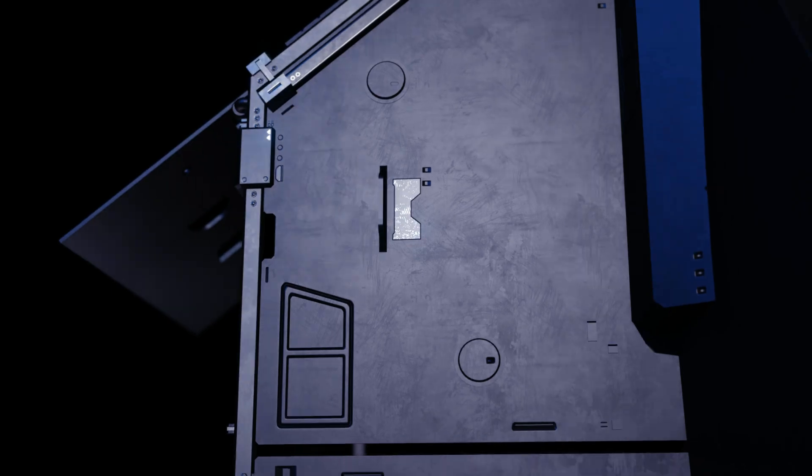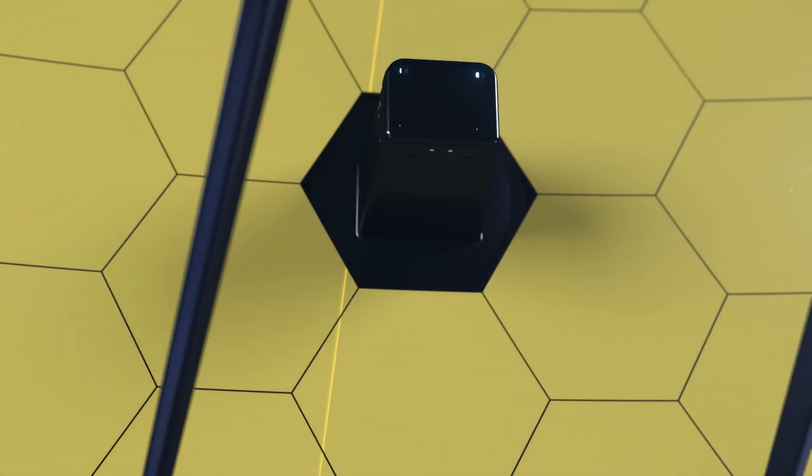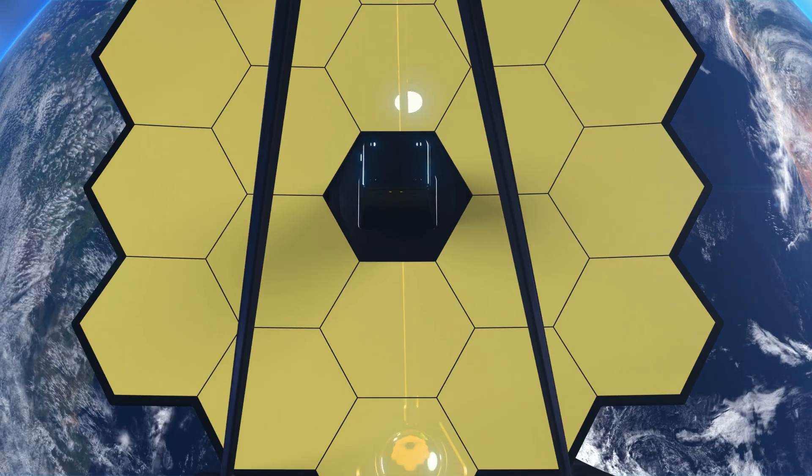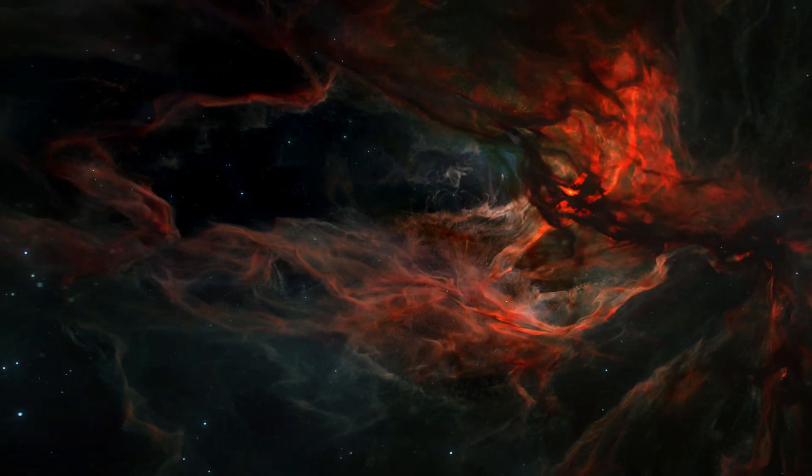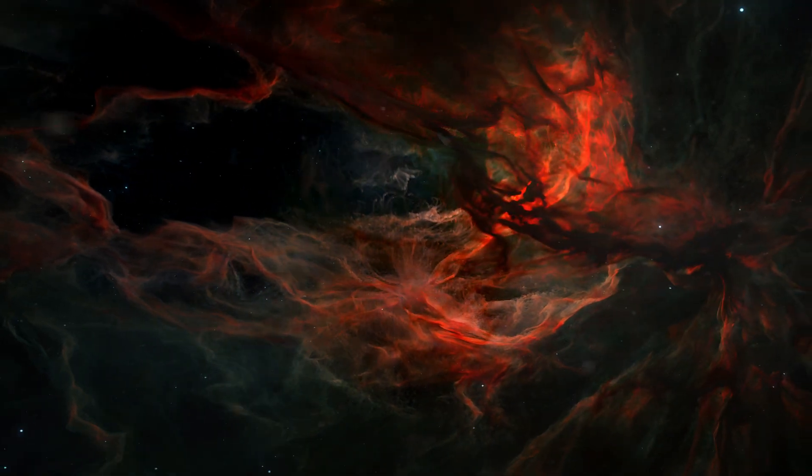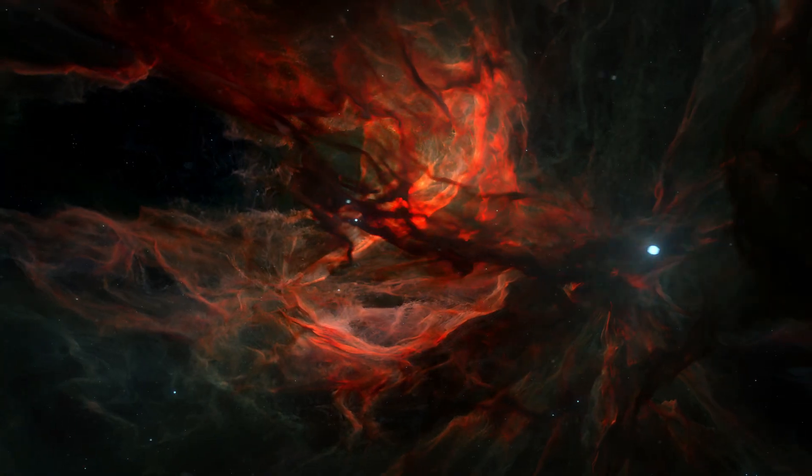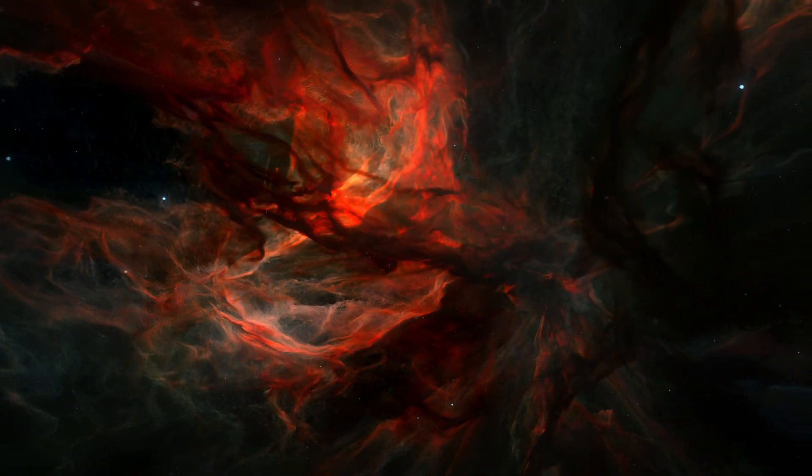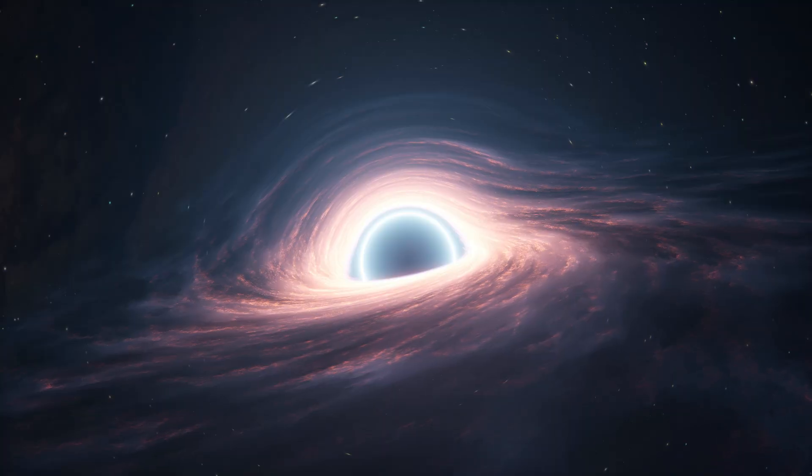So how did these monsters appear so early? One leading idea is the theory of direct collapse. Instead of beginning life as small remnants of stars, enormous clouds of pristine hydrogen gas may have collapsed straight into black holes with tens of thousands of solar masses. These heavy seeds would give black holes a massive head start, growing into giants while the universe was still young.